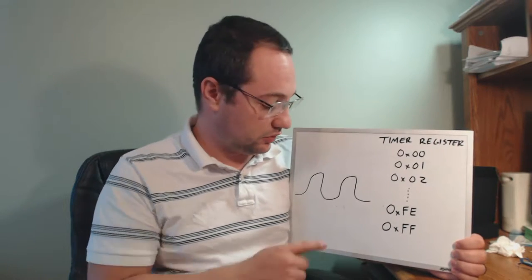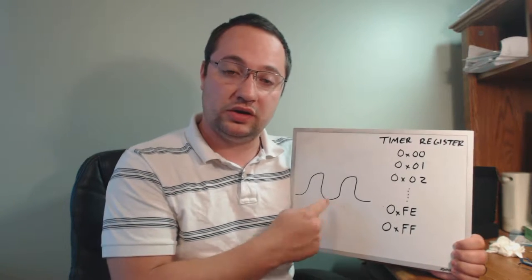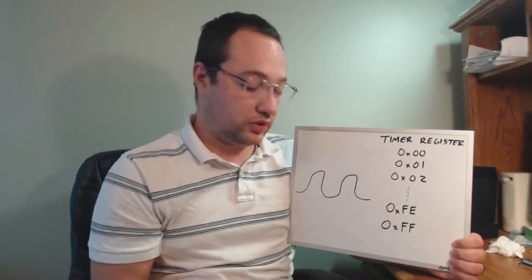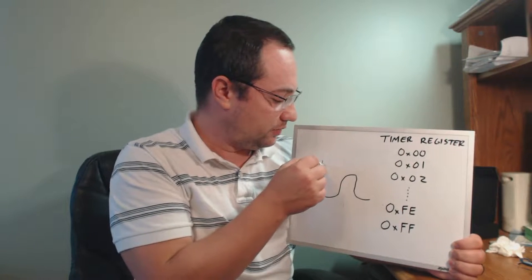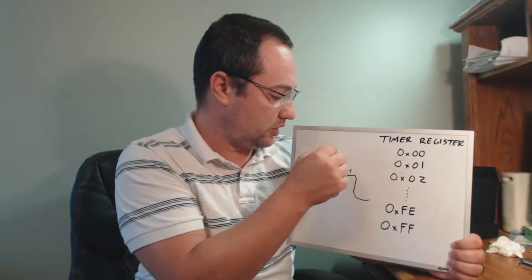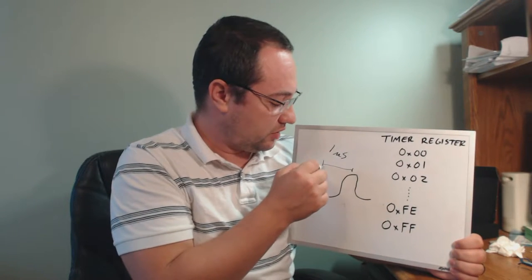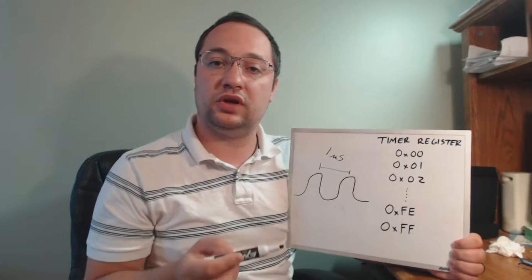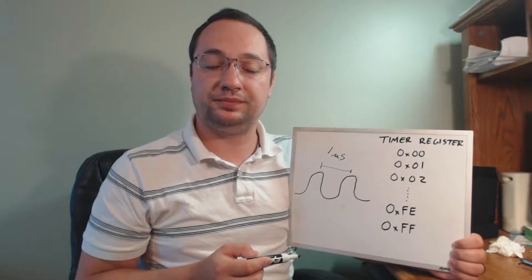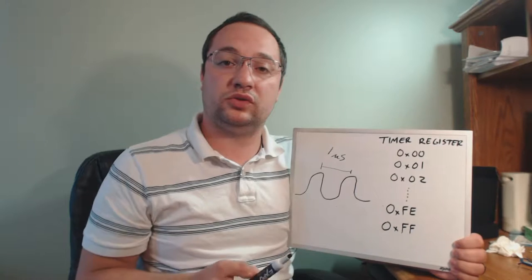So whenever you increment a pulse, you know how much time has gone by. For example, let's say we're using a 1 MHz clock that's internal to the processor. So you know that the time from peak to peak here is one microsecond. So if you keep track of from this pulse to this pulse, you know that one microsecond has gone by.